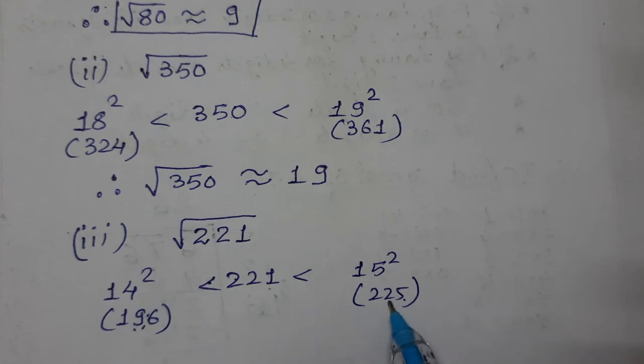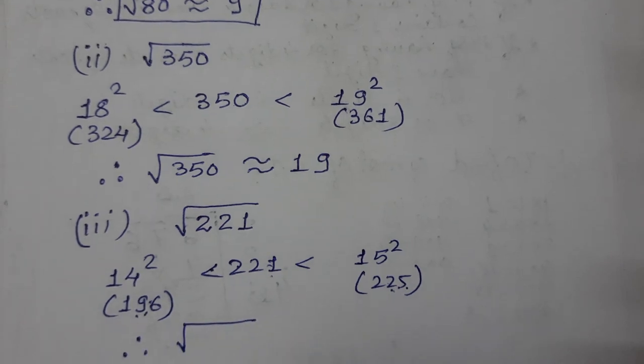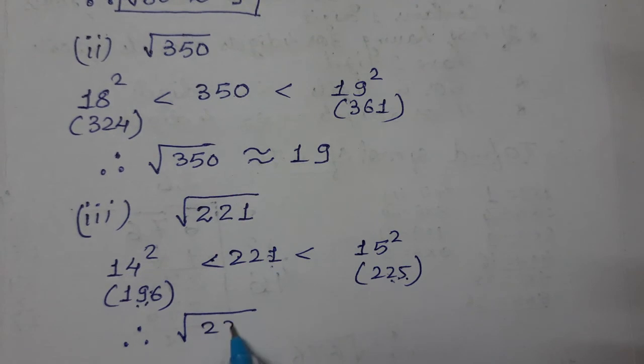Now it is closer to which? If it was close here, our answer would be that, but now it is close to 225, only 4 difference. Therefore, estimated, the square root of 221 is approximately equal to 15.